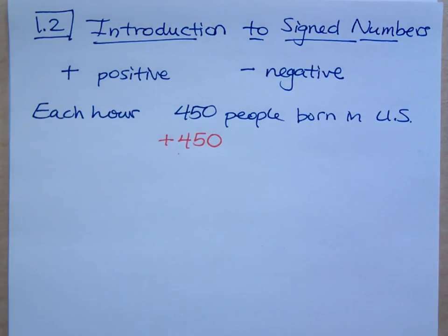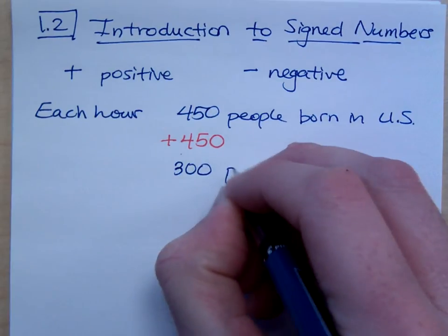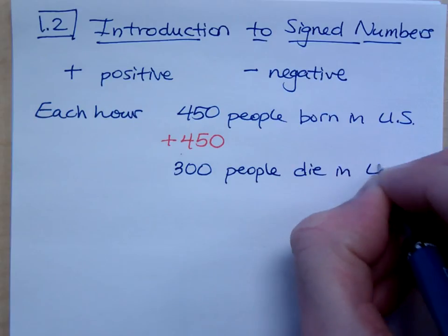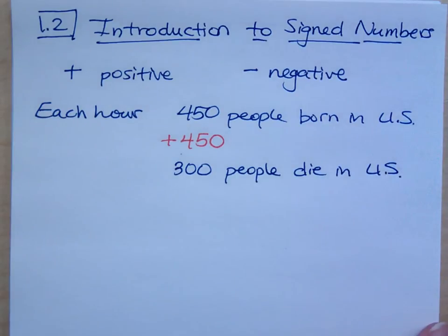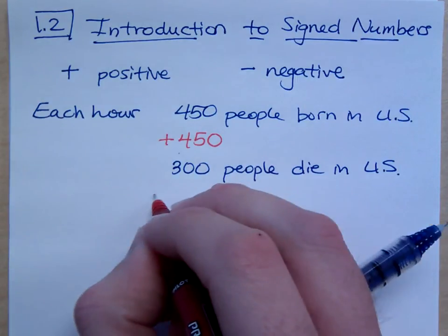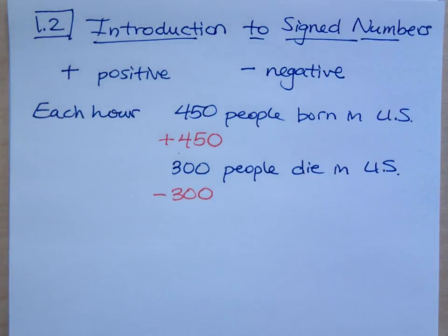I said 450 people were born in the U.S. every hour. Going back to what Dennis said earlier, he was focused on people dying. If I say 300 people were dying in the U.S., how would you translate that number using signs? That's a negative 300 because you're decreasing people, you're losing people.